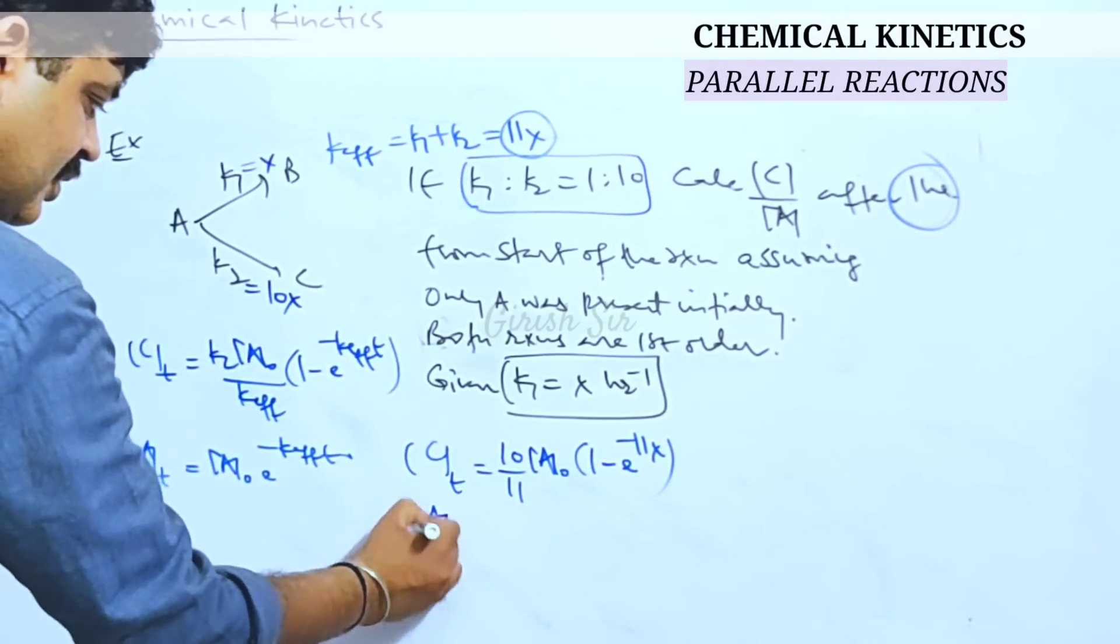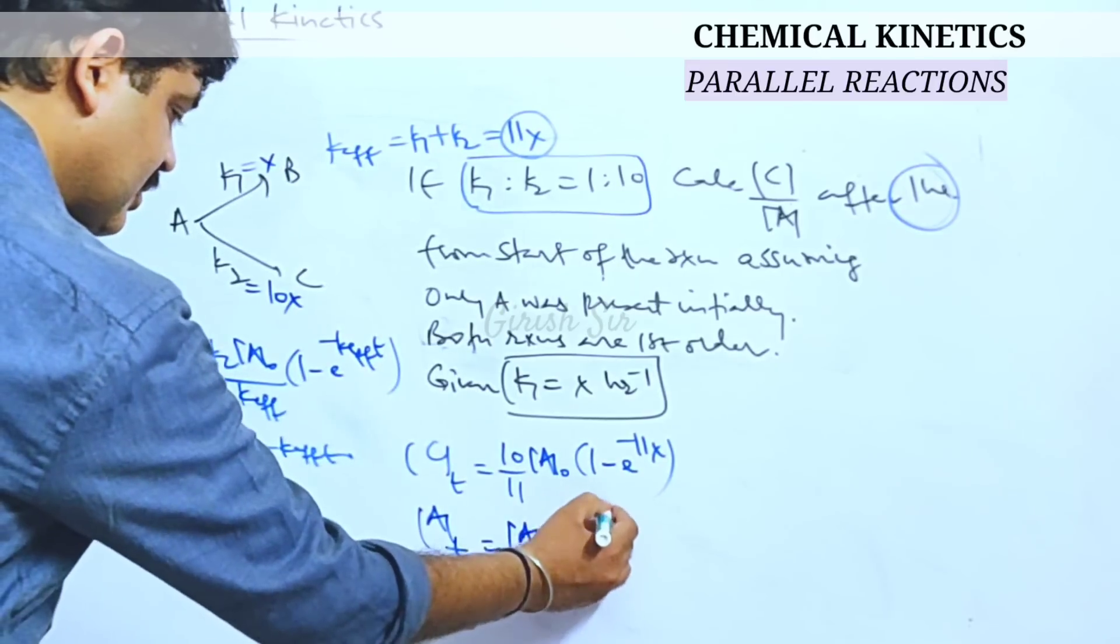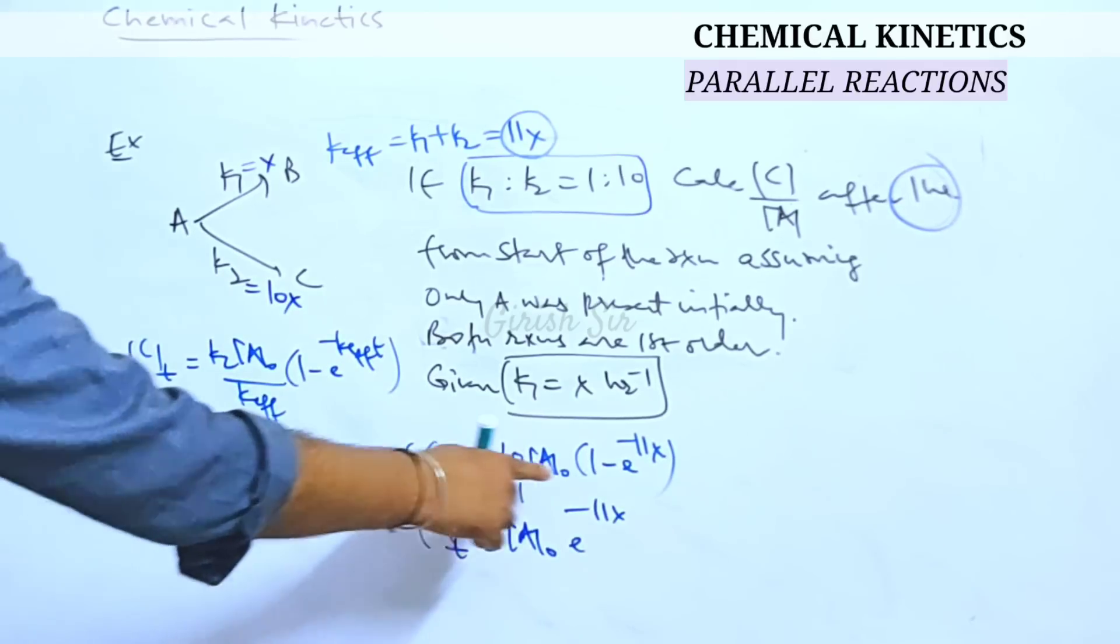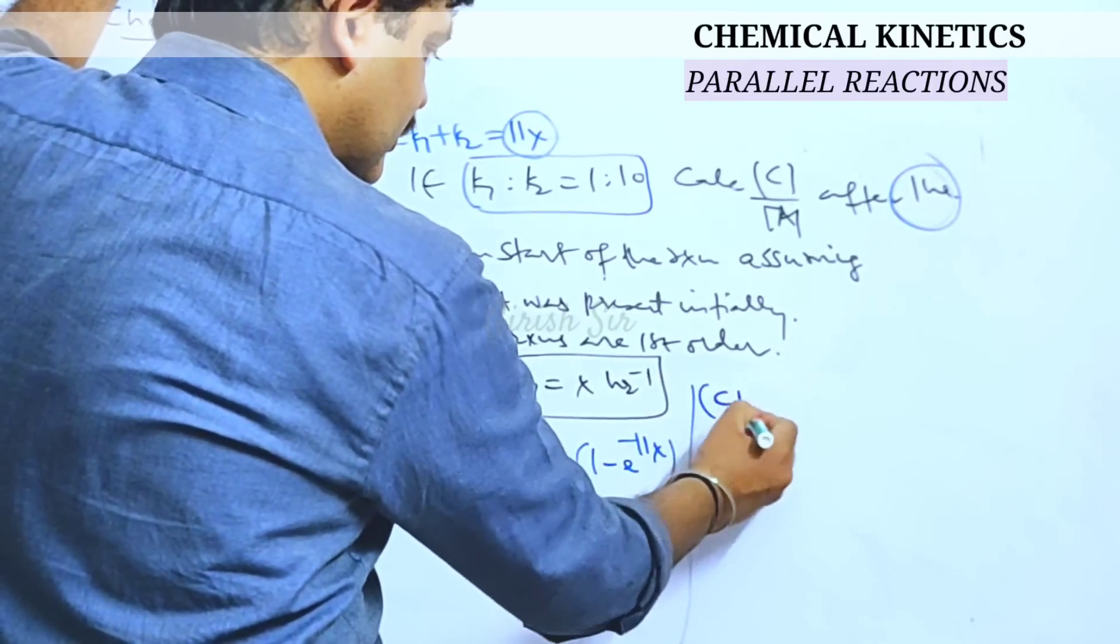Similarly, I will find out A at time T that should be A0 times e raise to minus 11x and T is again 1. So I use that value. Now we can divide these two and get the ratio of concentration.